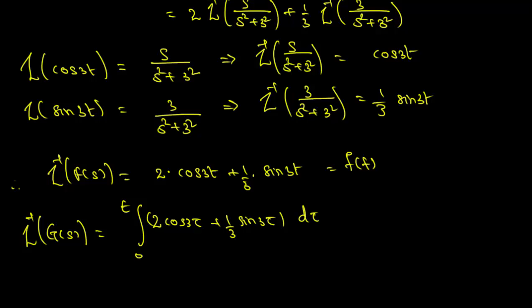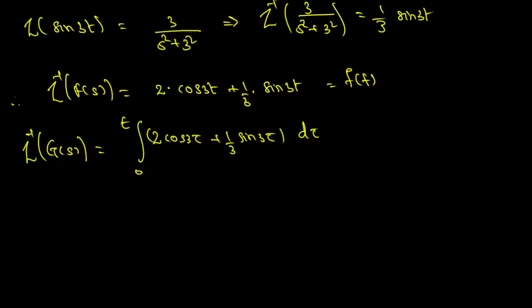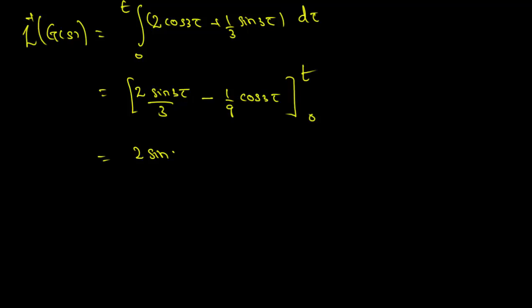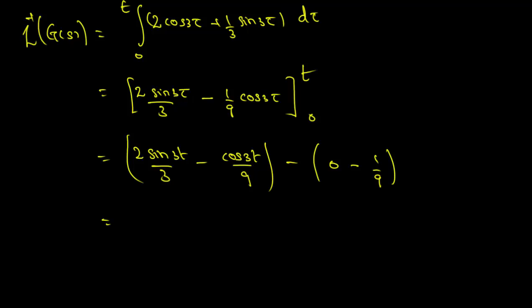Evaluating the integral, we get (2·sin(3τ)/3) + (−1/(9))·cos(3τ) evaluated from 0 to t. At t we have 2·sin(3t)/3 − cos(3t)/9, minus the value at 0: sin(0) = 0 and cos(0) = 1, so we subtract −1/9. Multiplying numerator and denominator by 3 for the sine term, we get (6·sin(3t) − cos(3t) + 1) / 9.